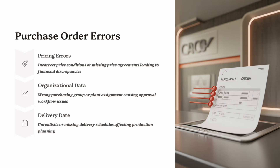Wrong purchasing organization or company code leads to authorization issues or posting failures because the PO doesn't match the correct organizational data. Invalid pricing conditions — missing or incorrect condition types like PB00 for price or freight/tax conditions — can cause mismatches during invoice verification. Incorrect delivery dates and unrealistic delivery timelines often result in overdue or blocked POs. Always double-check PO data against the purchase requisition, use a PO release strategy, and train end users to recognize mandatory fields and pricing conditions. A bad PO equals a broken process.